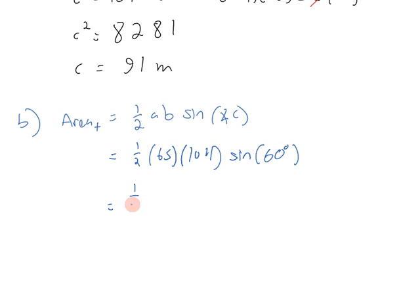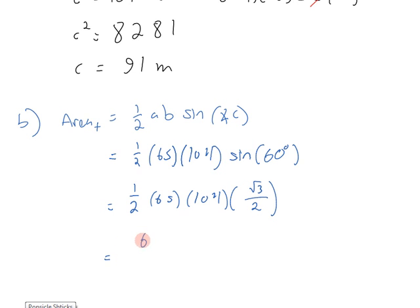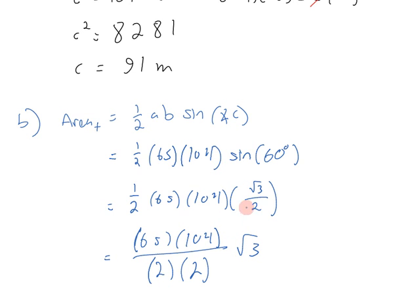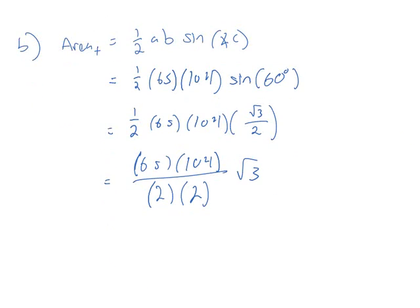We were told that the sine of 60 degrees is root 3 over 2, so we substitute: one half times 65 times 104 times root 3 over 2. We combine all numeric terms and leave root 3 alone — that's 65 times 104 divided by 2 divided by 2, times root 3. Plugging this into the calculator, we get 1,690 root 3 for our area.